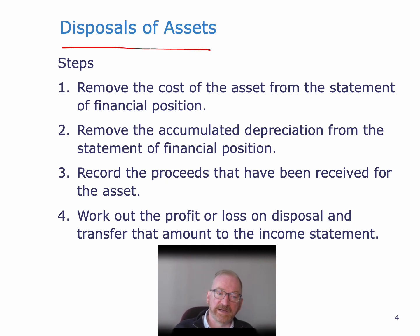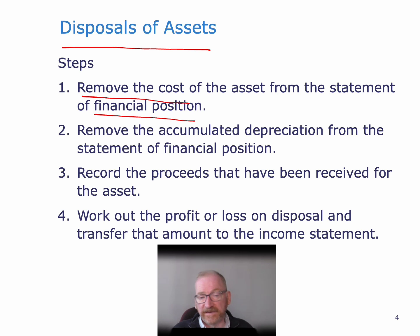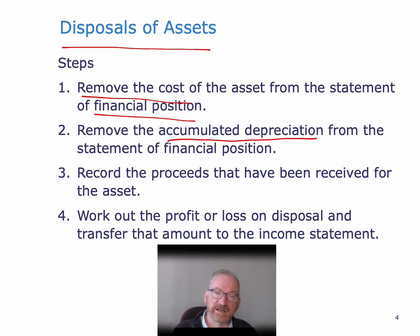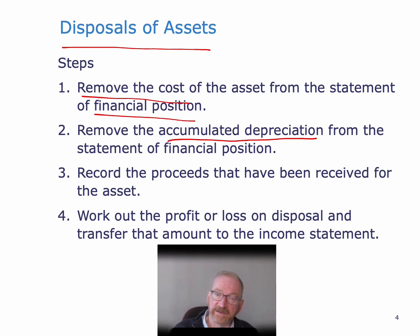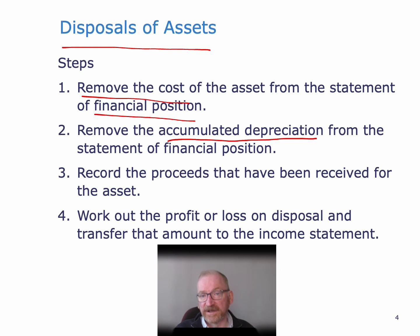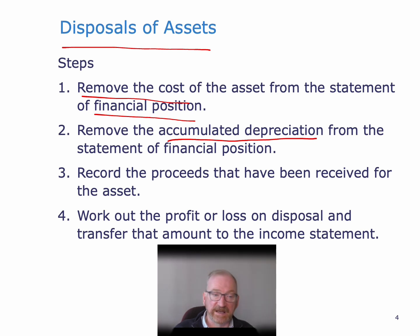The steps in disposing of an asset are: one, remove the cost of the asset from the statement of financial position; secondly, remove the accumulated depreciation from the statement of financial position — we need to get the asset off the balance sheet. We record the proceeds that have been received for the asset, so if somebody has paid us in cash, we debit the bank. We use a special disposal account to do all these debits and credits. And we also need to work out the profit or loss on the disposal and transfer that amount to the income statement.